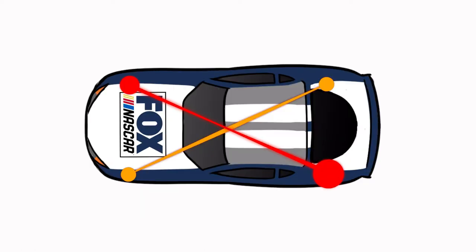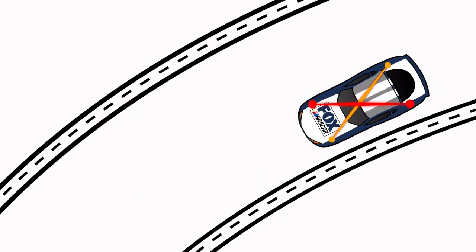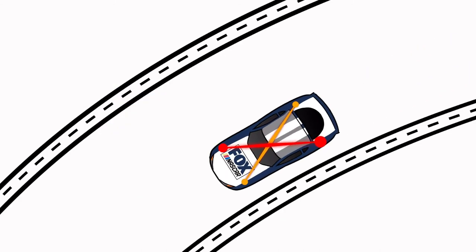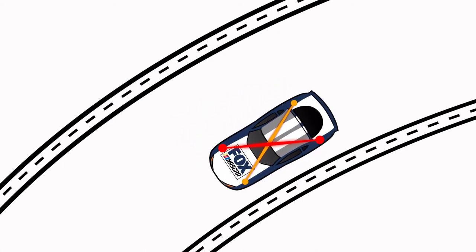Taking wedge out makes them both lighter. How does this help handling? By adding wedge, therefore adding weight to the left rear, you increase the grip in the rear of the car and make it tighter. By taking wedge out, you reverse the process and make the car looser.